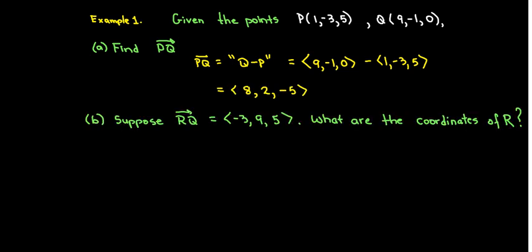Using the same point Q, suppose that I have a vector RQ with components negative 3, 9, and 5. I'd like to find the coordinates of the point R. RQ is still going to be Q minus R, and it's the R that's missing here.